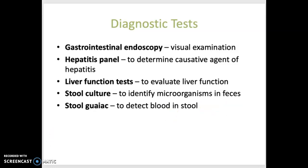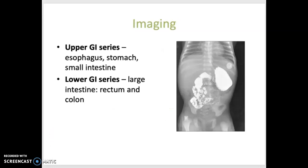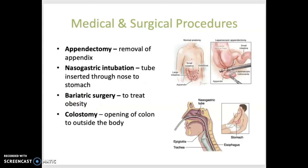As far as imaging goes, an upper GI series involves x-rays of the rectum and the colon. For medical and surgical procedures, an appendectomy is the surgical removal of a diseased appendix, which is often what will result if you have appendicitis.